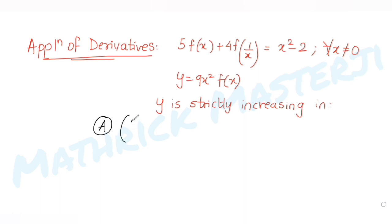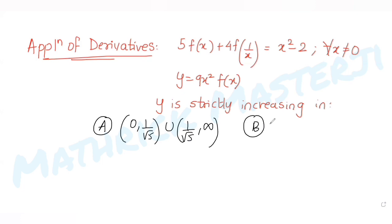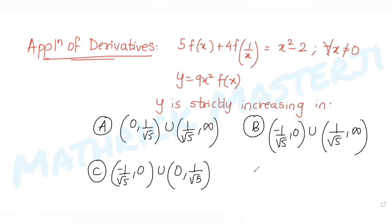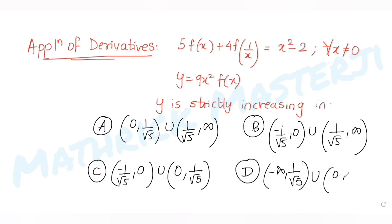The answer choices are: (A) (0, 1/√5) ∪ (1/√5, ∞); (B) (−1/√5, 0) ∪ (1/√5, ∞); (C) (−1/√5, 0) ∪ (0, 1/√5); and (D) (−∞, −1/√5) ∪ (0, 1/√5). We need to figure out which one is correct.